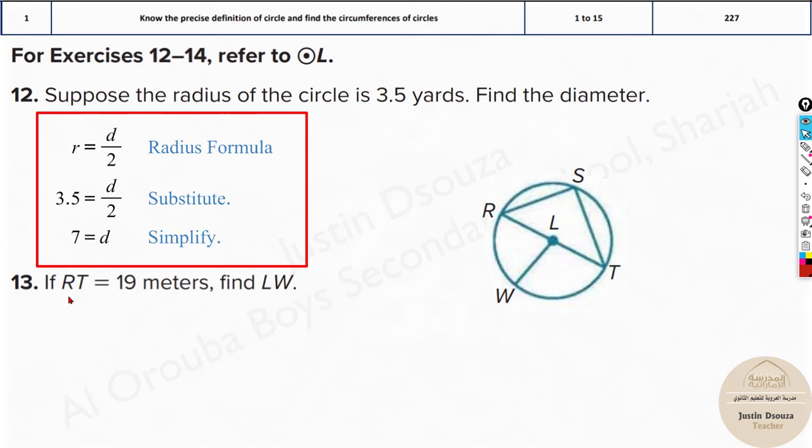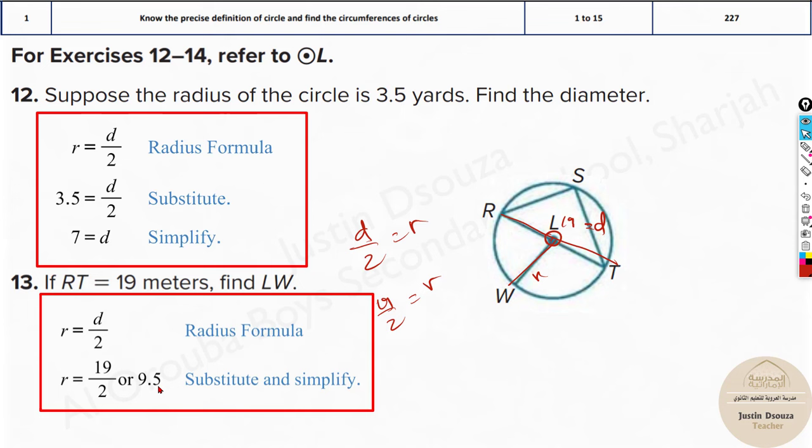Now, if RT, look over here, the diameter RT from here to here is given 19. What is LW? RT passes through the center, so it's the diameter. LW passes through the center to the end of the circle, so it's a radius. Just divide D by 2, you will get radius. 19 by 2 is the answer. Look into your options. You might have the option of 19 by 2 itself, 19 by 2 meters. Otherwise, you need to write 9.5.